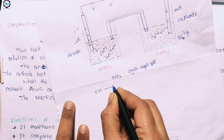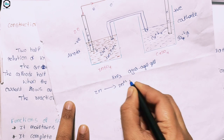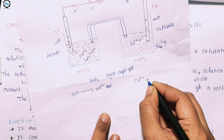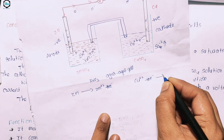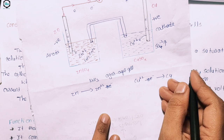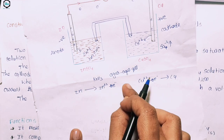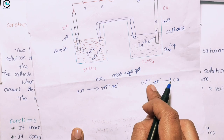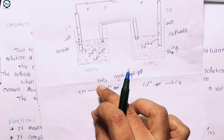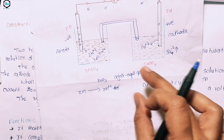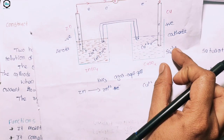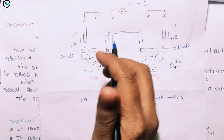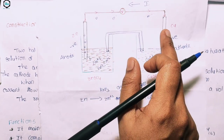At the anode, zinc (Zn) is oxidized to Zn²⁺, releasing electrons — this is the oxidation reaction. At the cathode, Cu²⁺ ions absorb the electrons and are reduced to copper — this is the reduction reaction. The anode is negative and the cathode is positive. Electrons flow out of the cell at the anode and into the cell at the cathode.